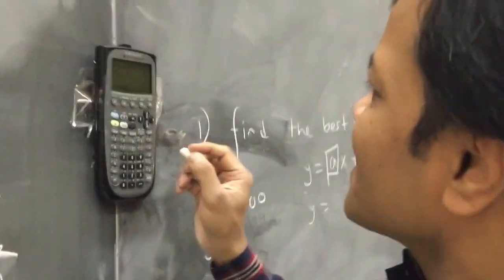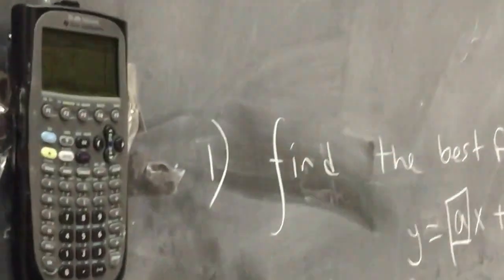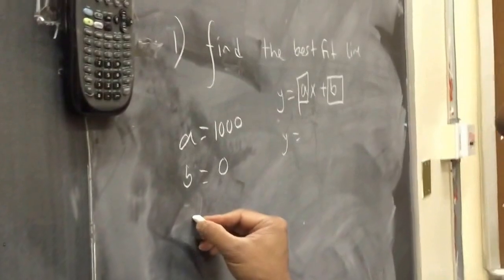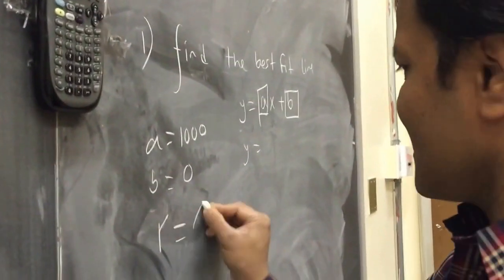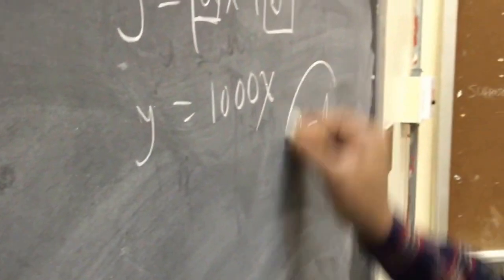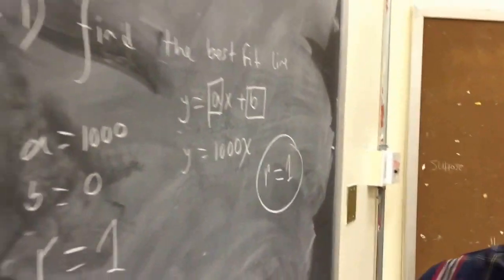B is, and correlation is 1. And B is 0 and correlation, which is R, R is 1. So 1,000 times X, and the R is 1. There is a perfect relationship. So that means there is no variance.